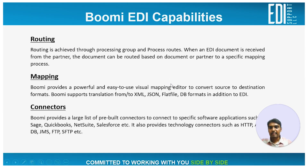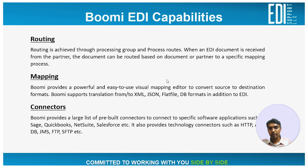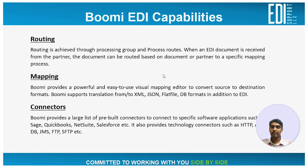The next important functionality is connectors. With digital adoption, every enterprise is subscribing to a large number of SaaS applications, and the IPaaS solution should offer a wide range of connectors to easily integrate EDI documents into such SaaS applications. Boomi provides a large list of pre-built connectors to connect to specific software applications such as Sage, QuickBooks, NetSuite, and Salesforce. In addition, it also provides technology connectors such as HTTP, AS2, DB, JMS, FTP, SFTP, etc. Connectors help in faster development of integrations by importing API fields and mapping them to EDI fields.